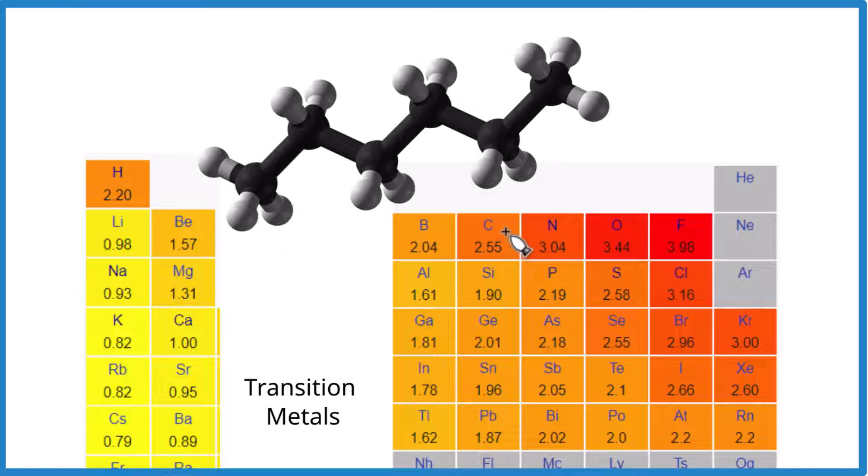When we look at polarity, we need to look at the electronegativity differences and the symmetry of the molecule. So carbon right here is 2.55, hydrogen 2.20. So we have a difference of 0.35 in electronegativity between each carbon here and each hydrogen.